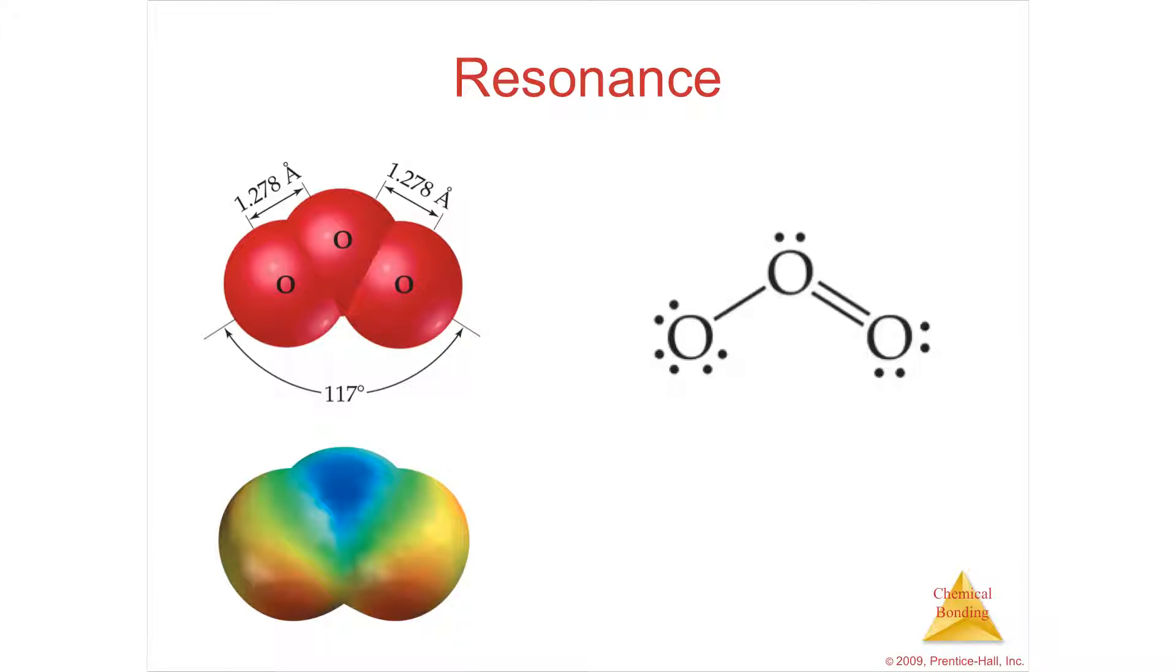The only way to describe this, if the Lewis structure is good but the data tells you that the bonds are the same, is with something called a resonance structure.